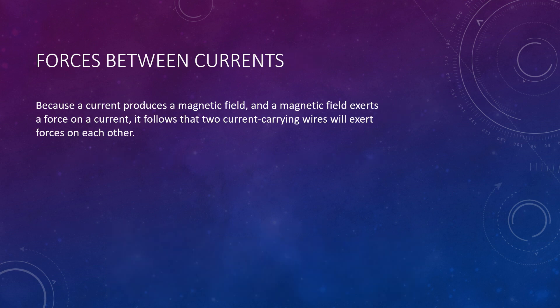We know that a current, by definition, will produce a magnetic field. Furthermore, a magnetic field will exert a force on a current — kind of a backward effect. So if you happen to have two wires next to one another, we should see that they exert forces on each other.